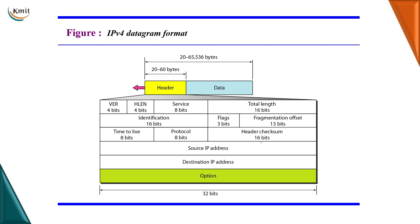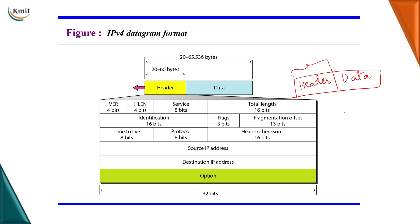We are going to study the datagram format. The datagram has two parts. Why do we call it a datagram and not a packet? Because it's a connectionless service — in analogy to the postal system. The datagram basically consists of a header and the data to be transmitted. The header contains information about the datagram represented in different fields.